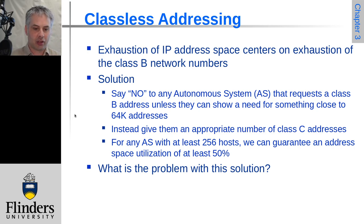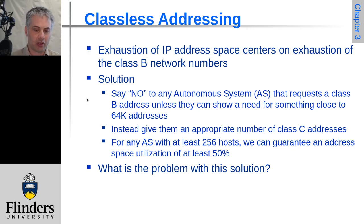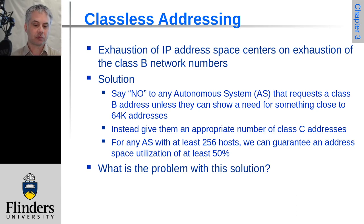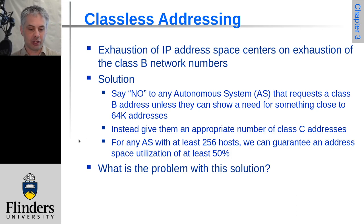The solution was to say you can't have a 64K class B block unless you can really show you need nearly 64K addresses. Instead, you would be given a contiguous range of class C addresses chosen with a subnet number within the logical space, so that you could summarize it with a single network mask. This would achieve much higher utilization of address space.